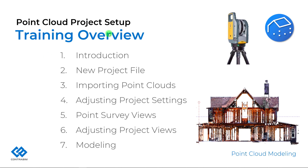Our general outline is: we'll do a quick introduction, then start a new project file, import our point clouds, adjust our project settings like our stories so floor-to-floor heights are correct, create new views that help us work efficiently with the point clouds — little slices for floor plans and reflected ceiling plans. Then we'll place sections, elevations, and interior elevations, which can be super useful when using point clouds. And then we'll talk a little bit about modeling. We'll probably record this all at once and then split it up into separate chunks or just have a full long tutorial for your viewing enjoyment.